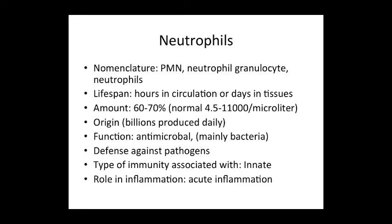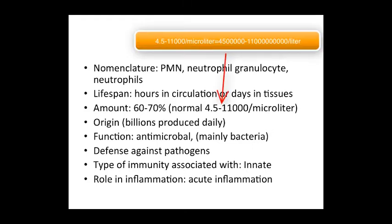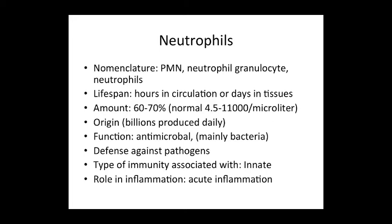Neutrophils have many names, which probably reflects their importance. The different names include polymorphonuclear neutrophils, neutrophil granulocytes, or just neutrophils. These are your most common white blood cells, making up 60 to 70 percent of the total, which ranges normally between 4,500 and 11,000 per microliter — so quite a lot.